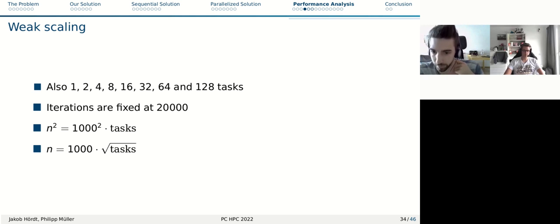What we scale up in the problem size is only the grid size. We scale this up in both dimensions. So we use a square grid, which is 1,000 by 1,000 for one task and 2,000 by 2,000 for four tasks. So we make sure that the total amount of grid points is proportional to the number of threads.